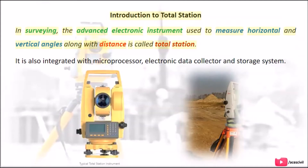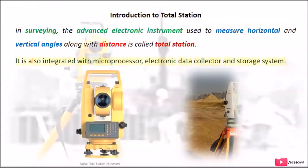Introduction to Total Station in surveying: The advanced electronic instrument used to measure horizontal and vertical angles along with distance is called Total Station. It is also integrated with a microprocessor, electronic data collector, and storage system.